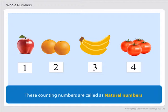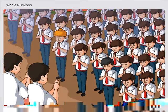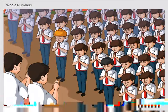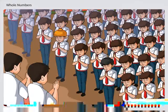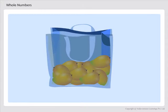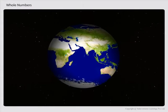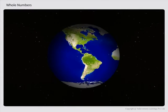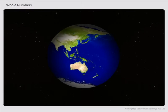Natural numbers are used in counting many things in our day-to-day life. For example, we can count the number of children in our school or the number of people in a city. We can count the number of mangoes in a bag. We can also count the number of people in the whole world.